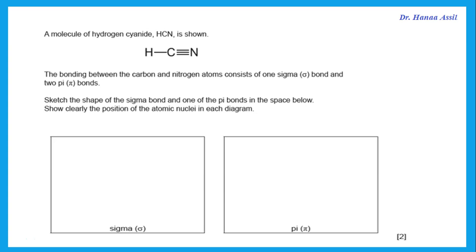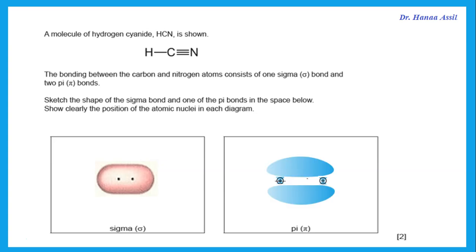In HCN, the question would often ask you to sketch the shape of the sigma bond and the pi bonds. Remember, between the C and the N we have a triple bond — one sigma and two pi. We draw the sigma bond as a head-to-head overlap. A pi bond is drawn as two lobes, since p orbitals have two lobes — one on top and one below — with the sharing between the positive nuclei of the two atoms sharing the electrons.